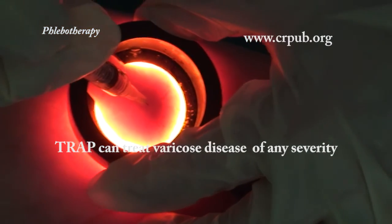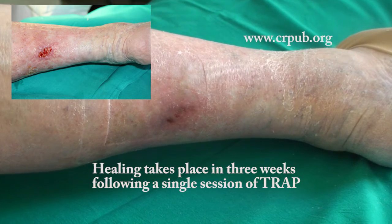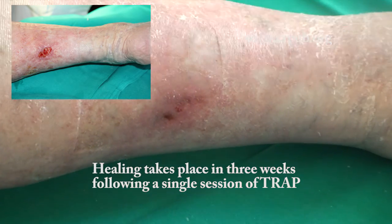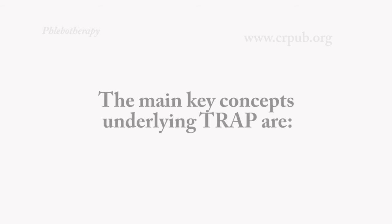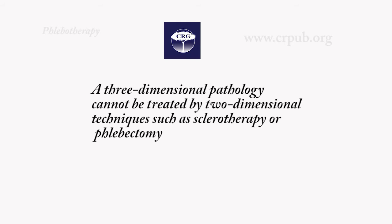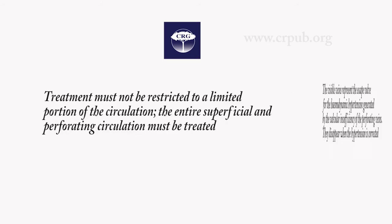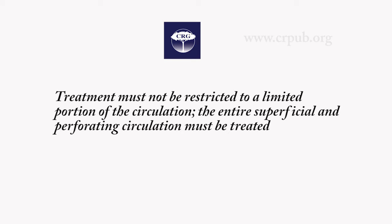We thank the French Phlebology Society and Jean-Marc Chardonnou for inviting us to Paris for the third time, which shows that in France, unlike Italy, the search for innovative therapies is continuing. The main key concepts underlying TRAP are: varicose disease cannot be cured by treating the effect and not the cause of the pathology. A three-dimensional pathology cannot be treated by two-dimensional techniques, such as sclerotherapy or phlebectomy. The visible veins represent the escape valve for the hemodynamic hypertension generated by the valvular insufficiency of the perforating veins; they disappear when the hypertension is corrected. Treatment must not be restricted to a limited portion of the circulation — the entire superficial and perforating circulation must be treated.